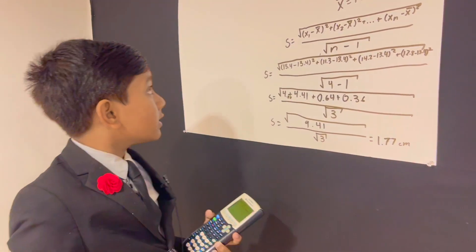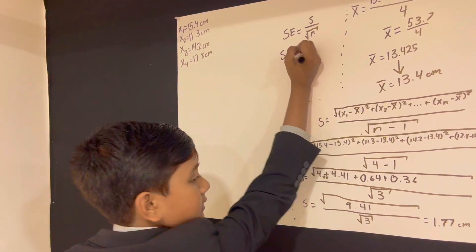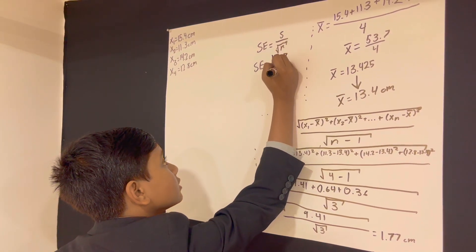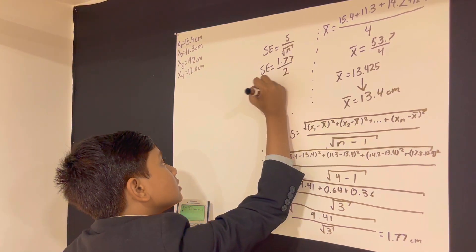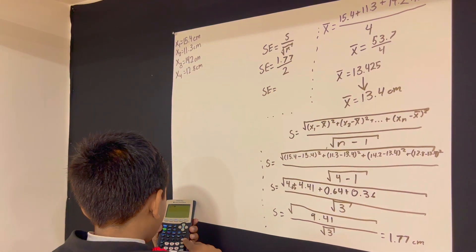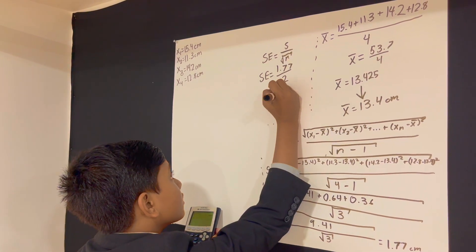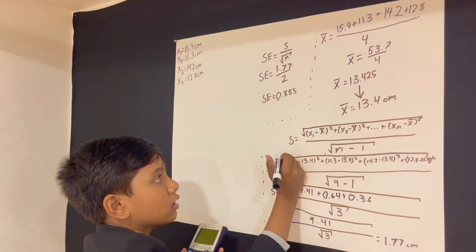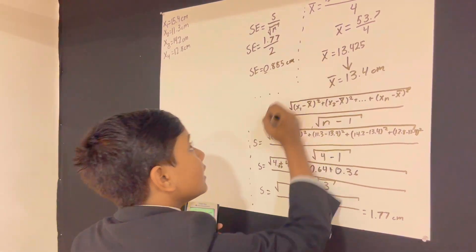But hold up, hold up! We still need to calculate the standard error. So that's the standard error. That just allows us to take 1.77 divided by the square root of four, which is two. So now, I'm gonna divide 1.77 by 2. 0.885. This does not count as a significant figure, so I'll allow it. So, our standard error is 0.885 centimeters.